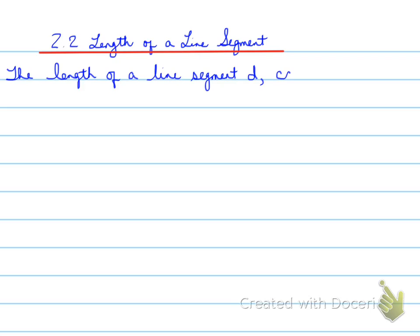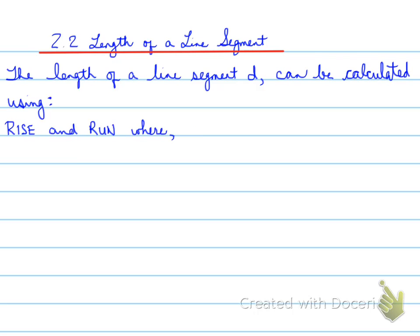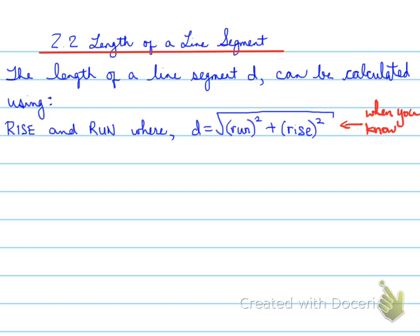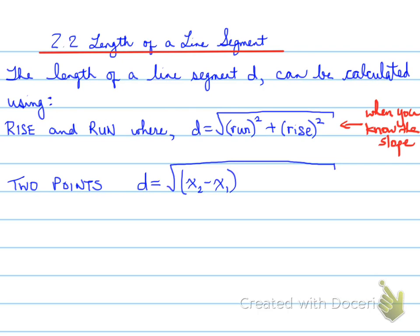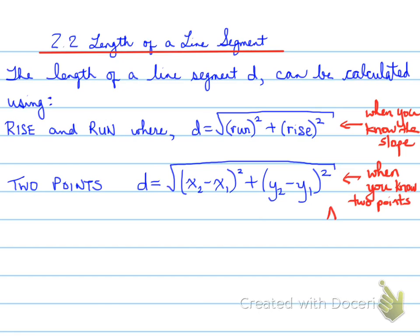The length of a line segment, D, can be calculated using rise and run, where D equals a formula when you know the slope, or using two points, where D equals another formula when you know two points.